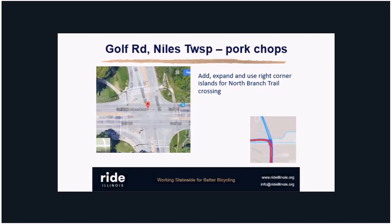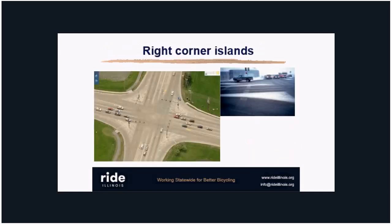A good example is in Aurora at the intersection of Orchard Road and Galena Boulevard on the west side of town — check it out on Google satellite imagery. They cross the trail to two different pork chops and recess them so left-turning trucks don't hit the island. It's a pretty big intersection but in the suburbs this is a way to alleviate issues that come up when turning radii are too large.